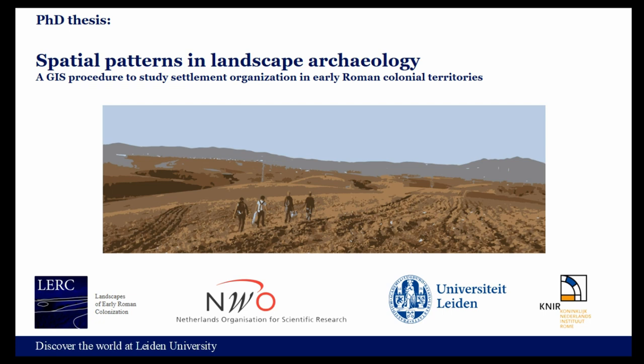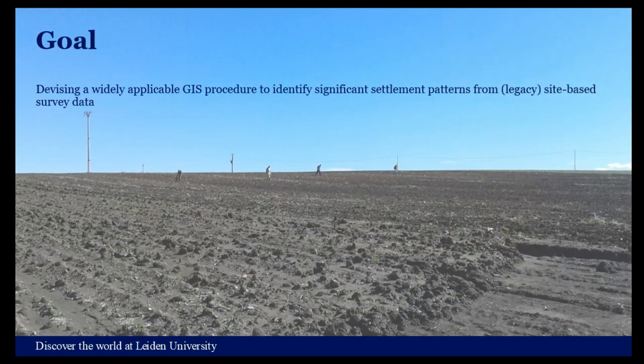The present state of the spatial pattern exhibited by survey data is determined by a multitude of natural and cultural processes which occurred during and after the deposition of archaeological material. By filtering out the effect of positional biasing factors, it is possible to obtain more representative patterns of past human behavior on which to base historical reconstructions. Achieving this goal is not an easy task and requires a solid methodology, which the current study presents.